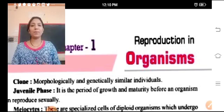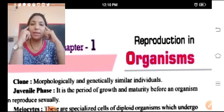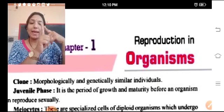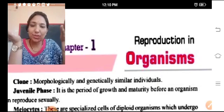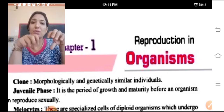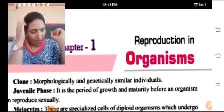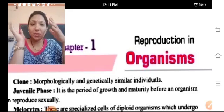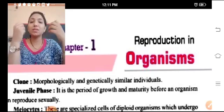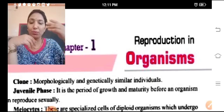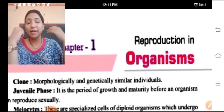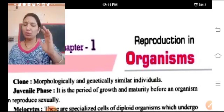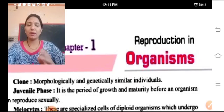Before starting any chapter, we should keep 3 things in our mind. Number 1: what is the name of the chapter, what is the meaning of the chapter, and why we are starting this chapter — why this chapter is mentioned in your book. Our subject is science, and science is a logical subject that gives us information about why things happen. So, Reproduction in Organisms is our chapter name, and the meaning of the chapter is Reproduction.